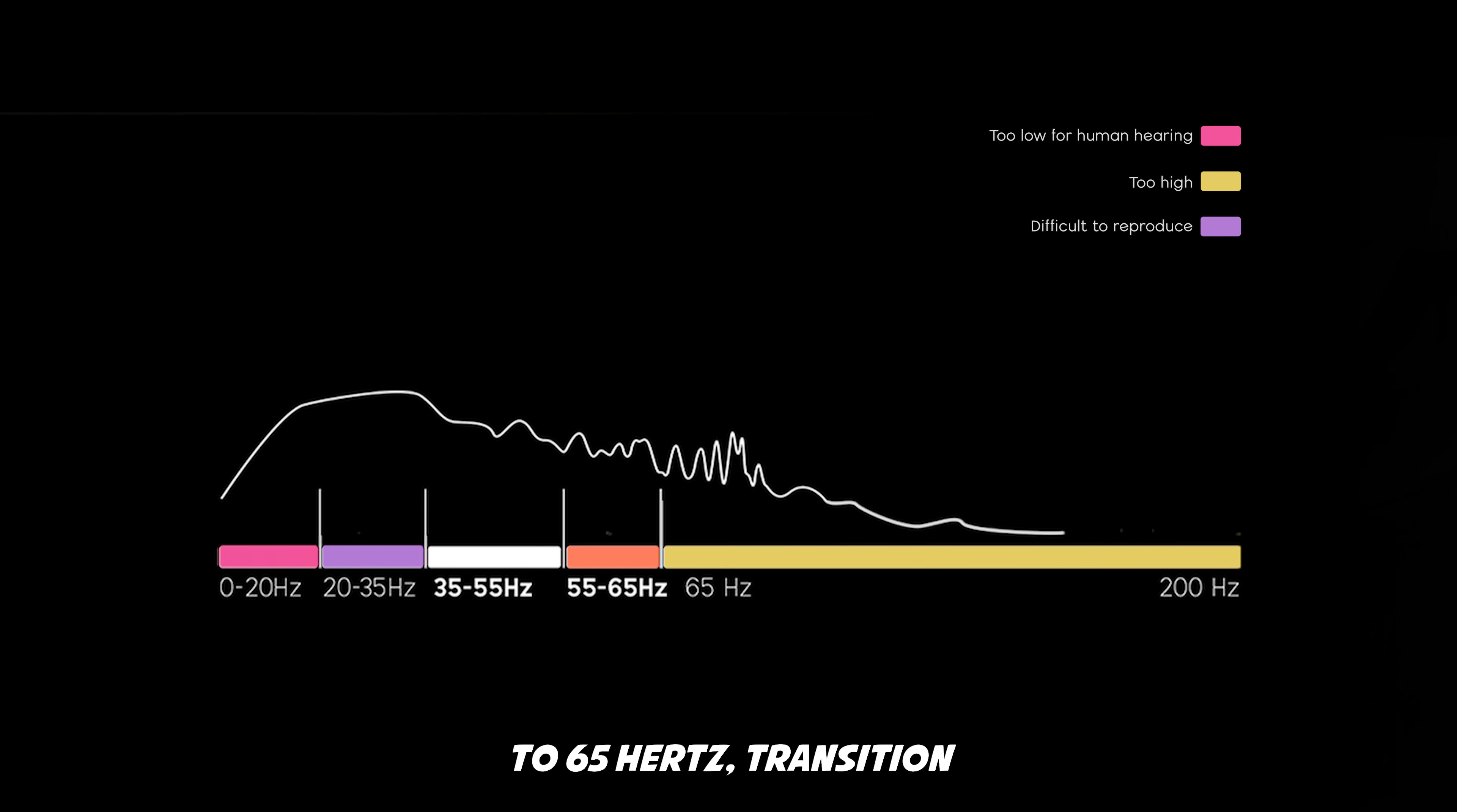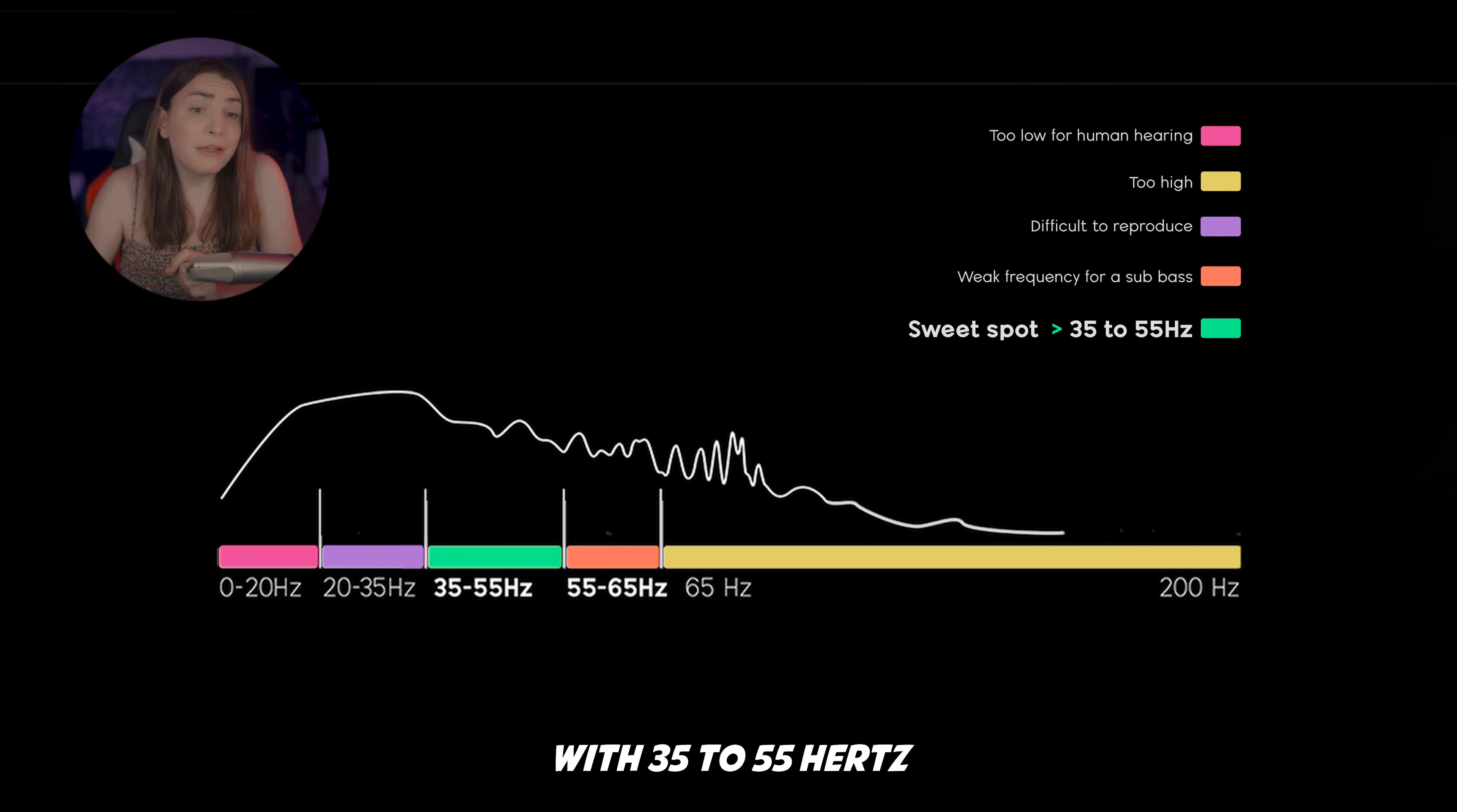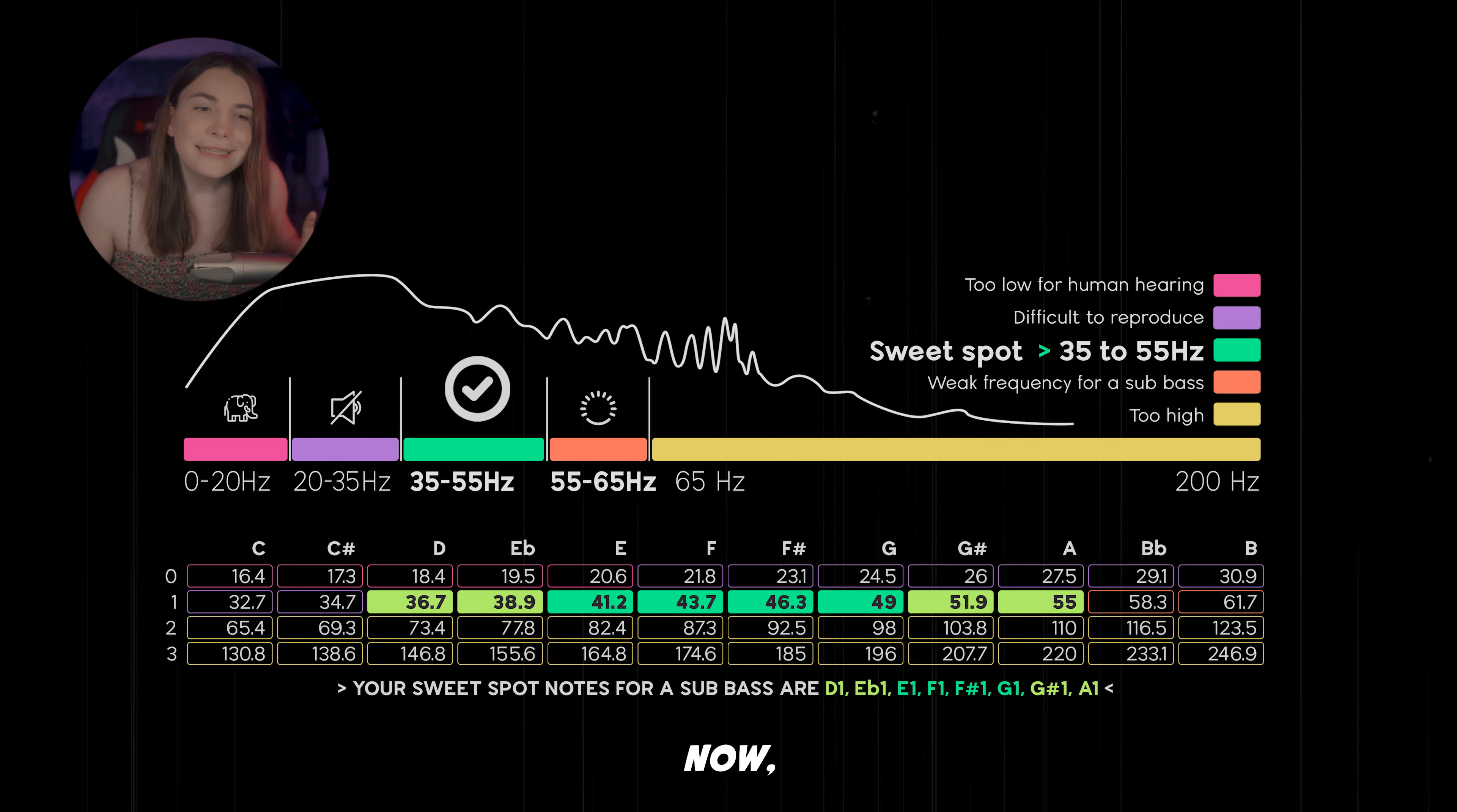And from 55 hertz to 65 hertz - the transition area from bass to sub bass - it may sound weaker than, let's say, 40 hertz. This means that we're left with 35 to 55 hertz for our sub bass range.